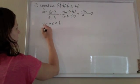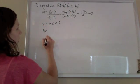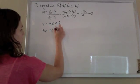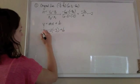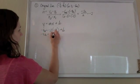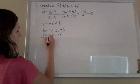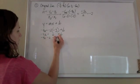So just plug in and solve. The y is negative 4a. It'll equal negative 2 times negative 3 plus b. So negative 4a equals 6 plus b. So negative 4a minus 6 equals b.